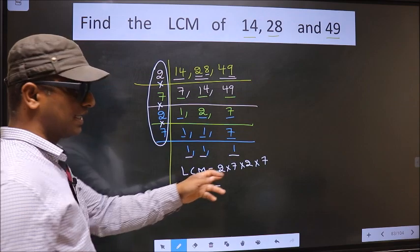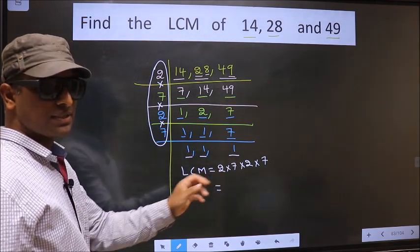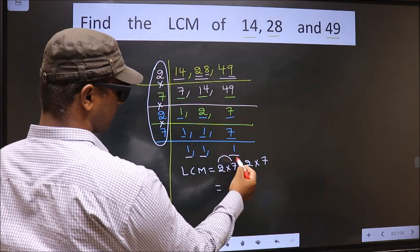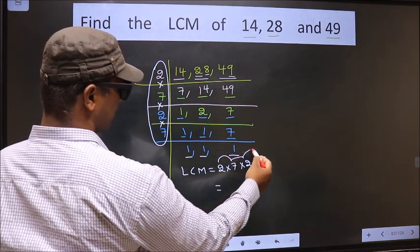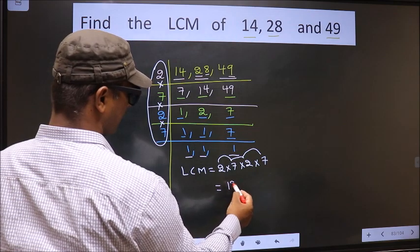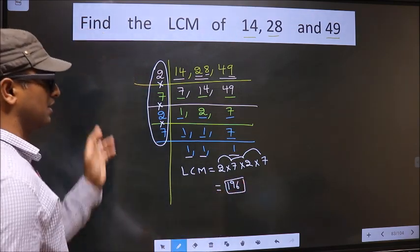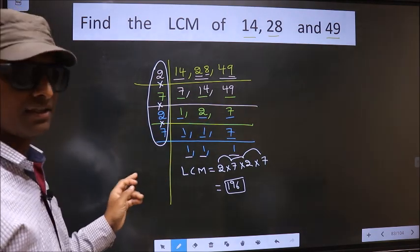Now, let us multiply these numbers. That is 2 into 7, 14 into 2, 28 into 7, 196. This is our LCM. Am I clear?